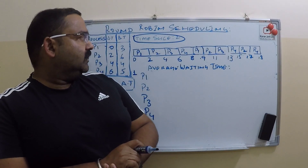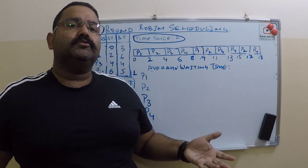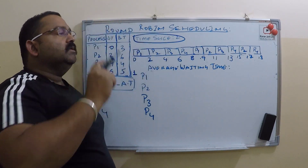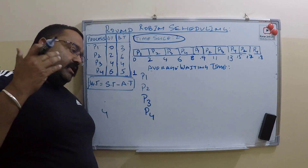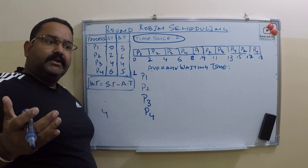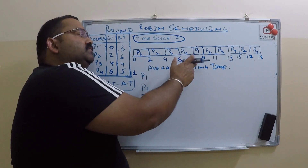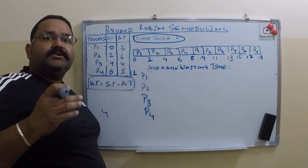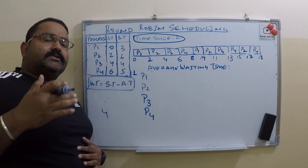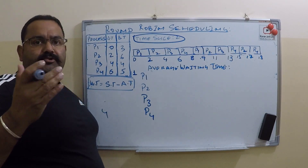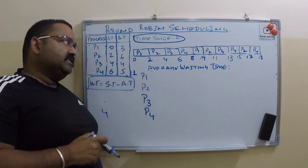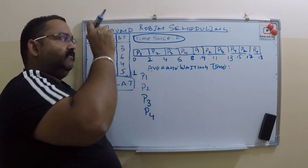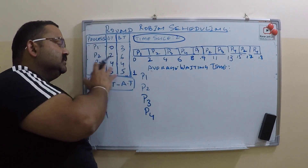Hi guys, welcome to my channel. In this video tutorial, I am going to explain how we can calculate the average waiting time for round robin scheduling. Before we calculate the average waiting time, we have to prepare the Gantt chart. For how I made this Gantt chart, you can refer to my other video about turnaround time and round robin scheduling — I will leave the link in the description. Now let us calculate the average waiting time for round robin scheduling for this scenario.